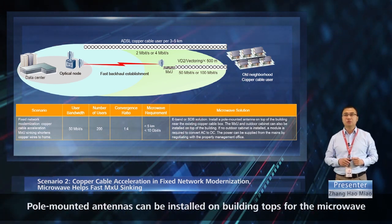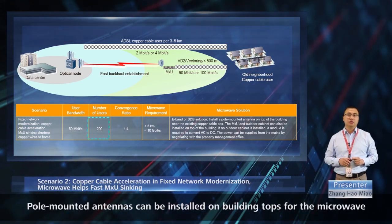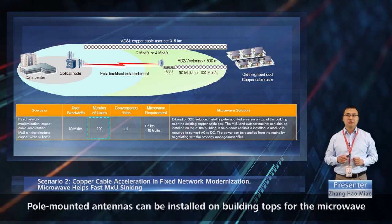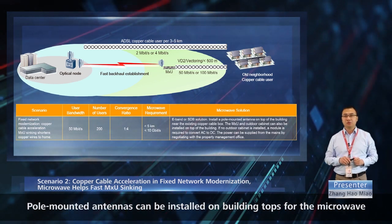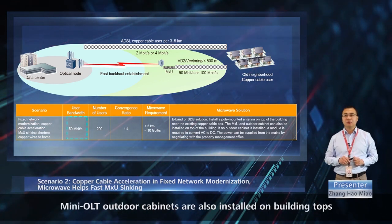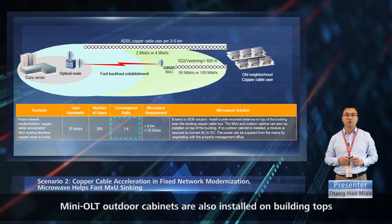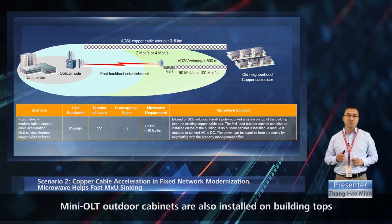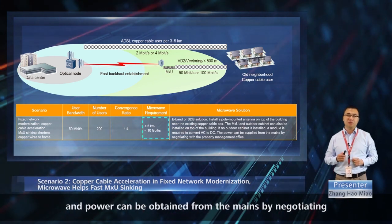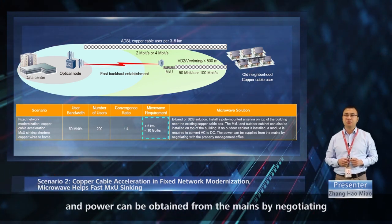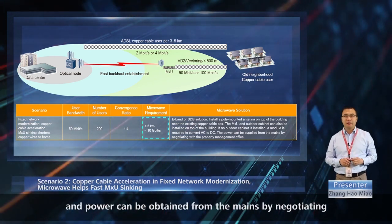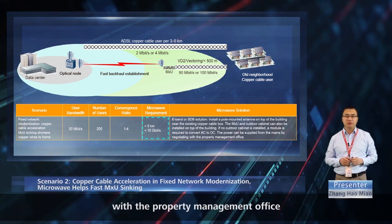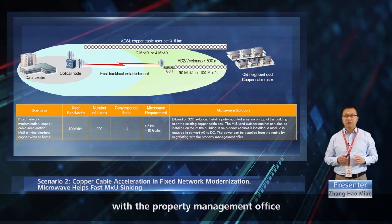Pole-mounted antennas can be installed on building tops for the microwave. Mini-OLT outdoor cabinets are also installed on building tops, and power can be obtained from the mains by negotiating with the property management office.